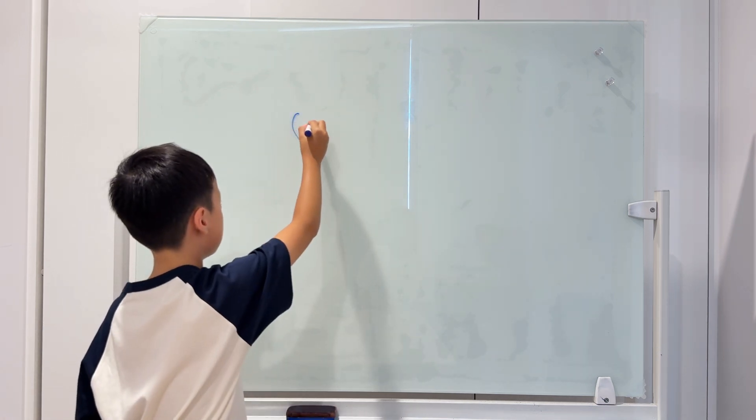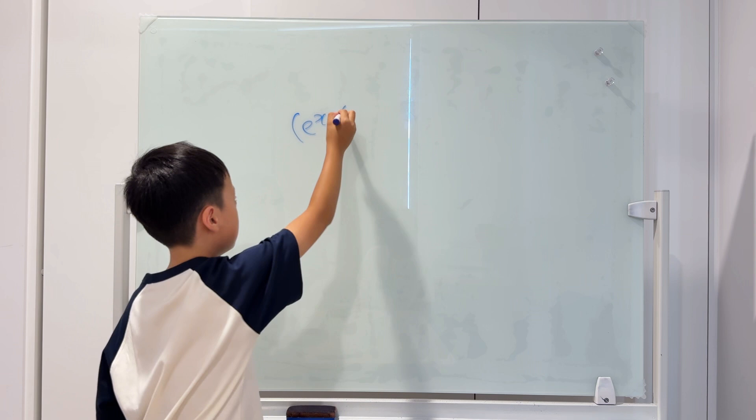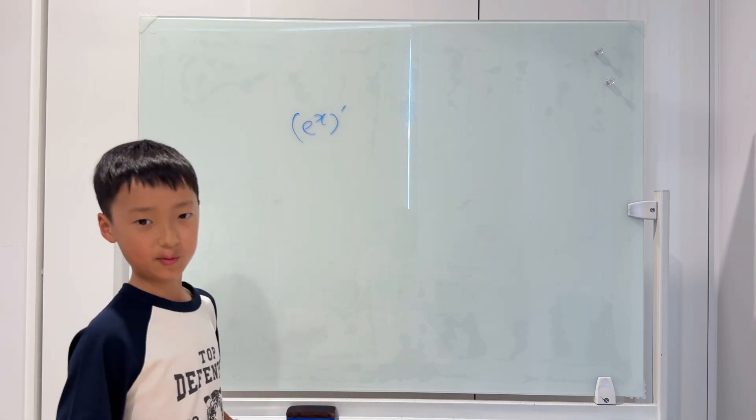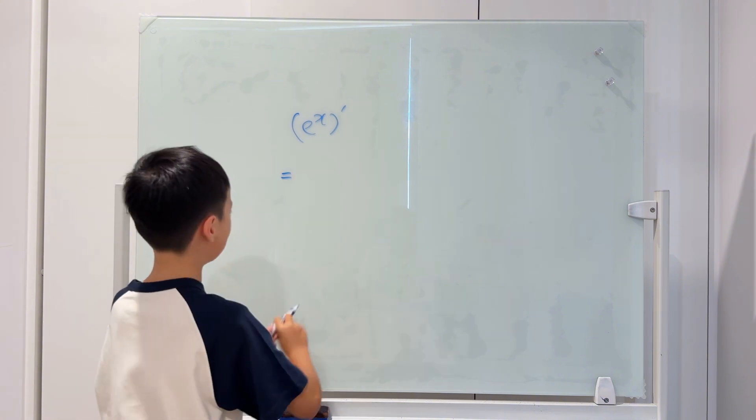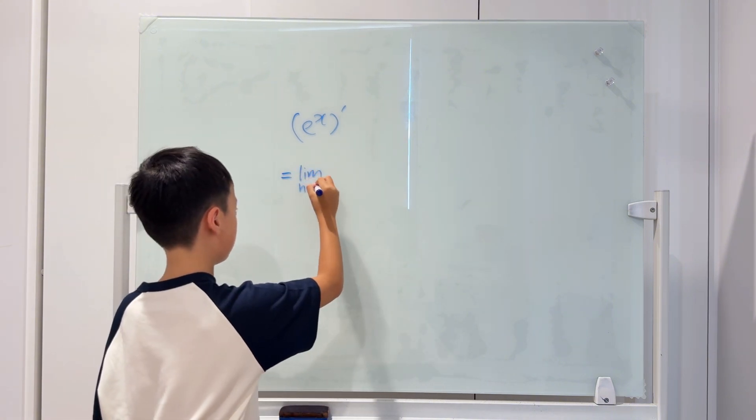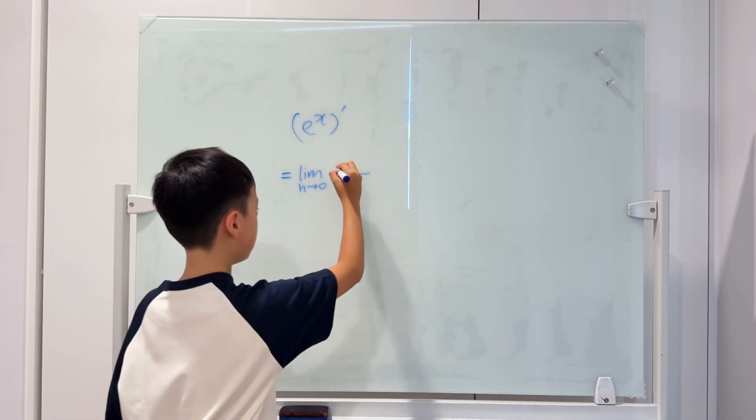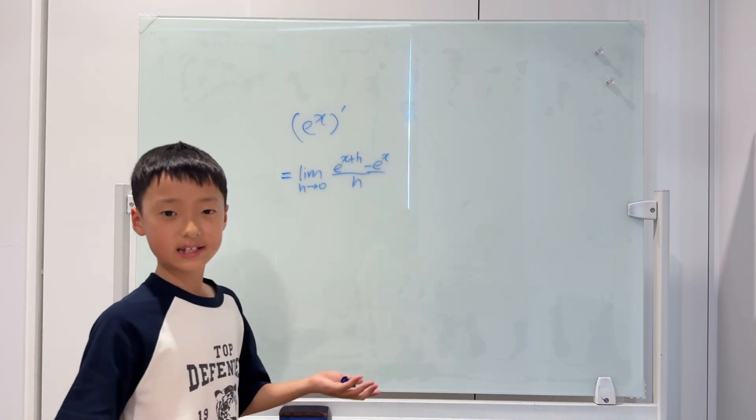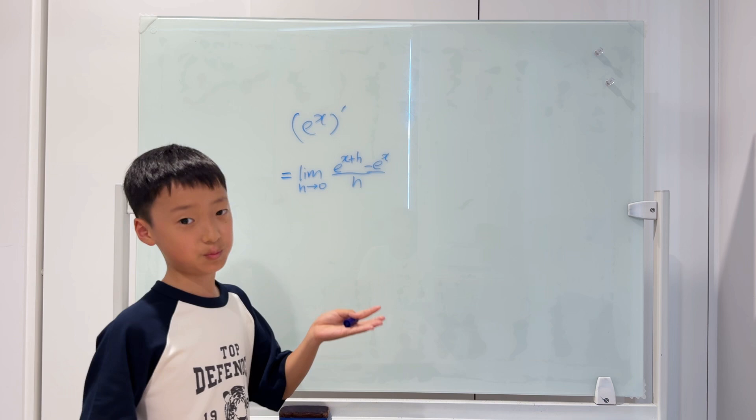Let's write it down, e to the power of x, the derivative of it. Everyone knows what first principle is, so I'm just going to write it. The limit of h goes to 0, and then e to the power of x plus h minus e to the power of x over h. This is the definition of first principle.